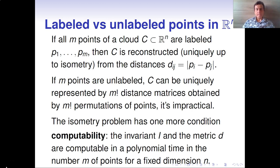If our points are labeled, the problem is much easier because the whole cloud C in Euclidean space Rn can be uniquely reconstructed up to isometry from pairwise distances. But if these points are not labeled, then in a brute force way we could reconstruct C by M factorial distance matrices. But considering M factorial permutations on all given points is rather impractical. That's why we add one more condition to the isometry problem: computability, in the sense that the invariant I and the metric on invariant values should be computable in polynomial time in the number of points for a fixed dimension.